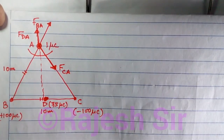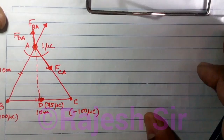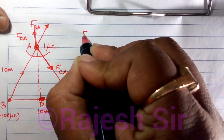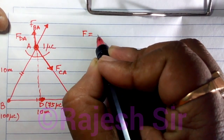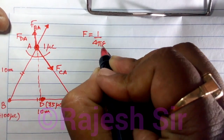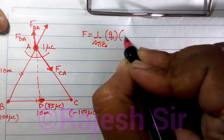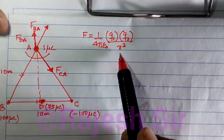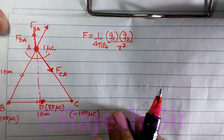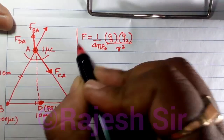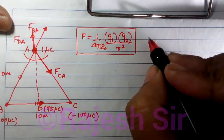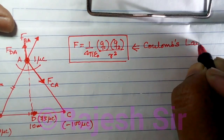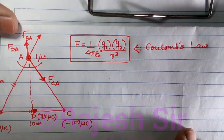Now I need to calculate the magnitudes. Since the charges are point charges, the force between them can be found using Coulomb's law: F equals 1 over 4π epsilon-naught times q1 times q2 over r-squared, where r is the distance of separation between the two charges. Remember, Coulomb's law is applicable only for point charges.